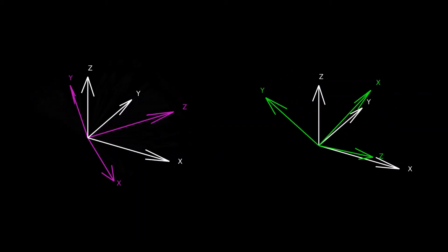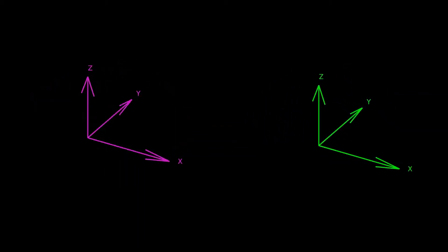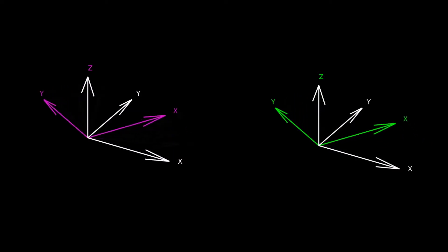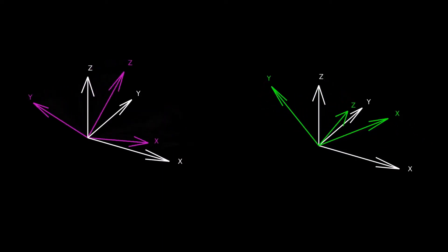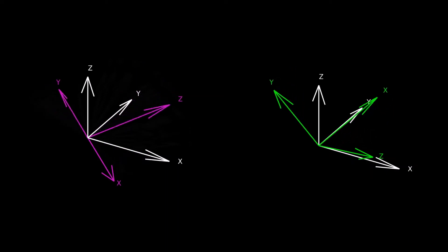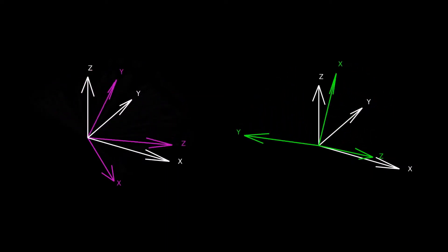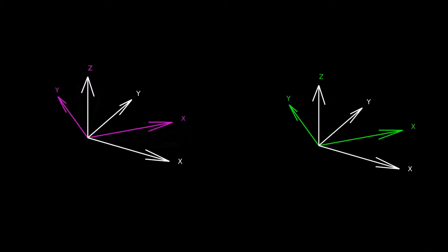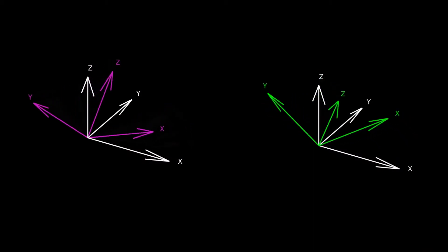These animations show two different examples of Euler angle sequences. Euler angle sequences are a sequence of three rotations about principal axes, which are the X, Y, and Z axes, that are commonly used to describe orientations of objects in 3D space, such as spacecraft, airplanes, drones, robots, and more.